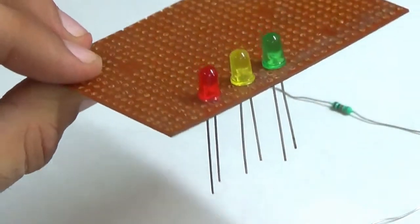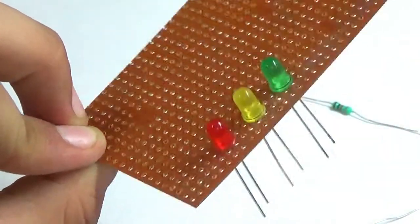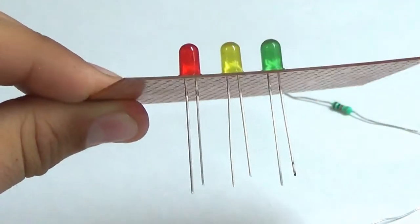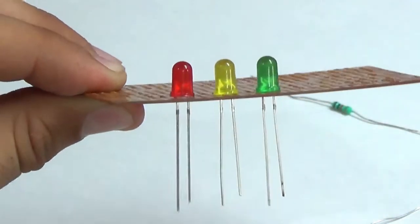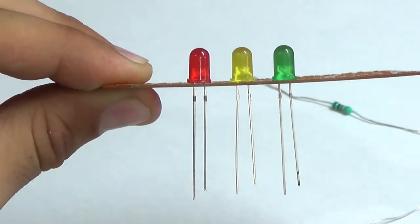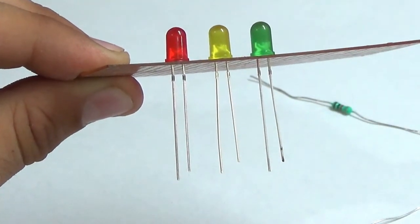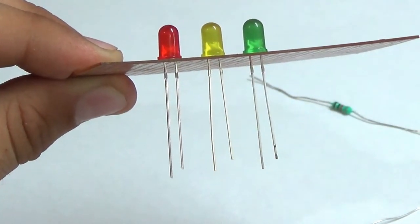What you want to do is connect each LED in series so that the negative of the red LED should be connected to the positive of the yellow LED, and the negative of the yellow LED should be connected to the positive of the green LED.